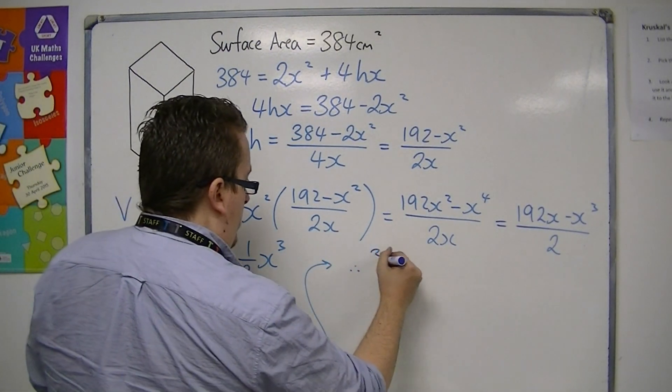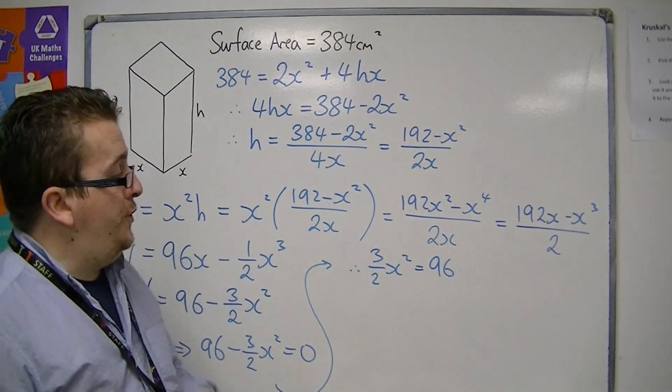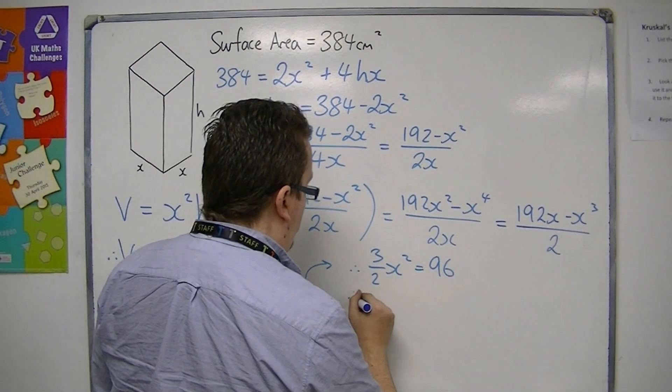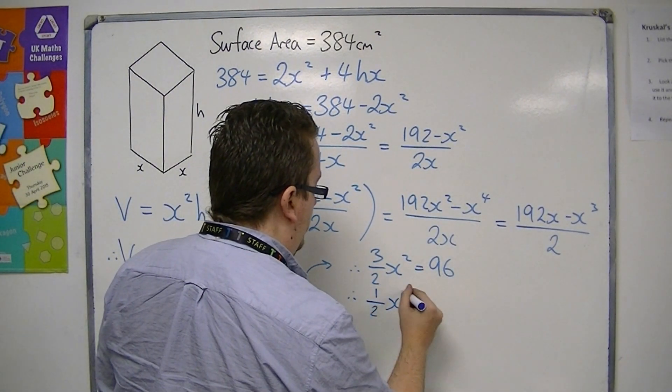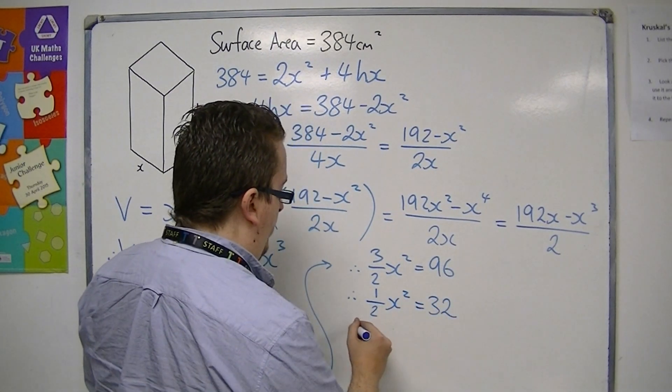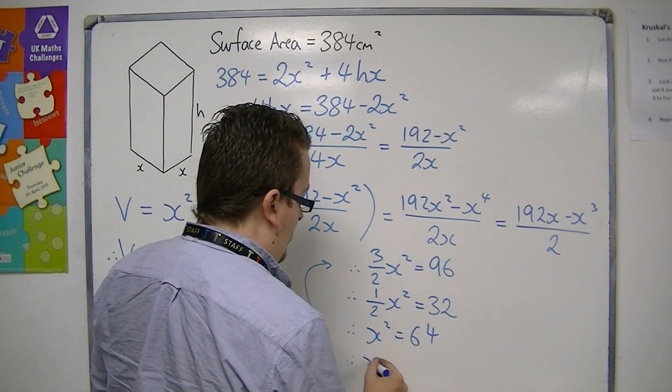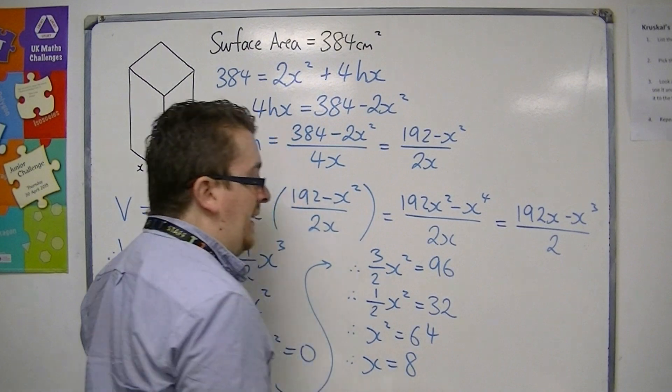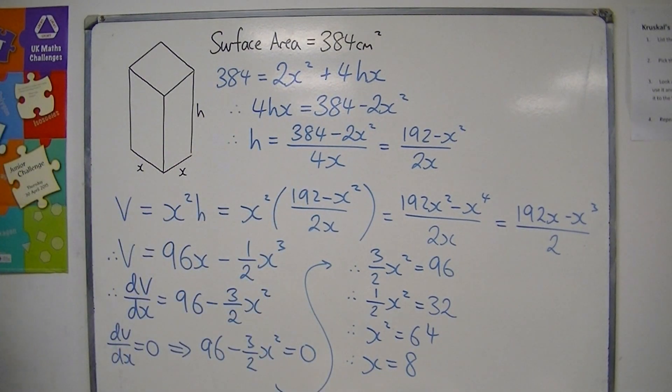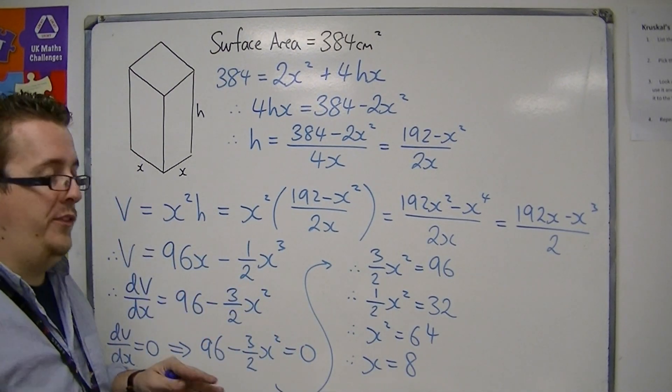So 3 halves x squared equals 96. Now if you divide both sides by 3, that would mean that you've got 1 half x squared is equal to 32. And then multiply both sides by 2, x squared is 64. So that would mean that x must be 8. x can't be negative 8 because x is a length. So x must be positive 8.